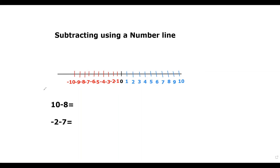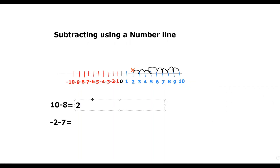We are going to look at each individual number. First we're going to look for our positive 10 — it is right here. Then it is minus 8, which is a negative 8, so we will be going towards the negative numbers, going backwards. Starting at 10, we are going to count back eight times: 1, 2, 3, 4, 5, 6, 7, and 8. We found our answer right here, which is a positive 2. So 10 minus 8 equals positive 2.